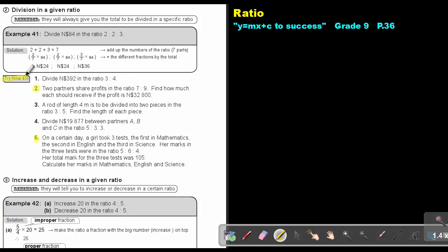Let's start. Try now. 41 number 2. Two partners share in the ratio 7 to 9. Find how much each should receive if the profit is 32,800.